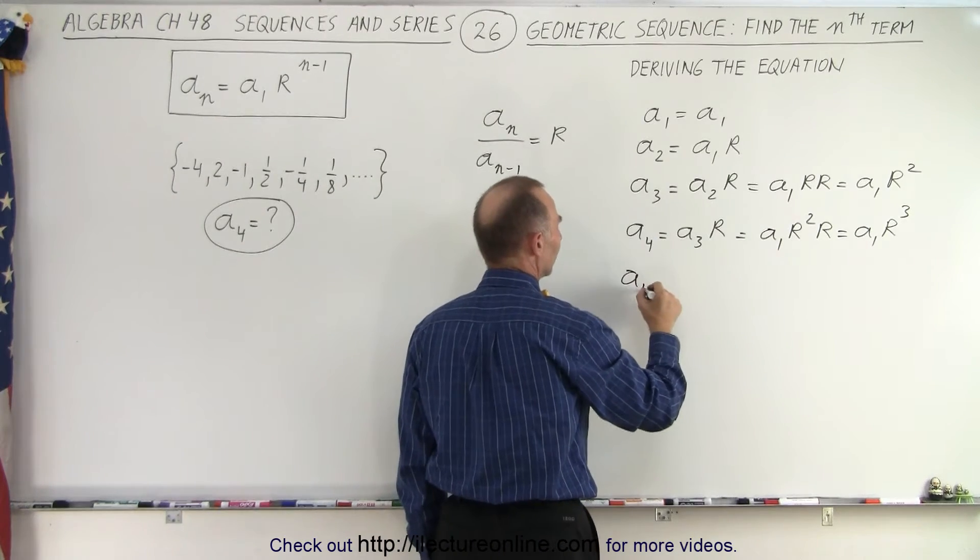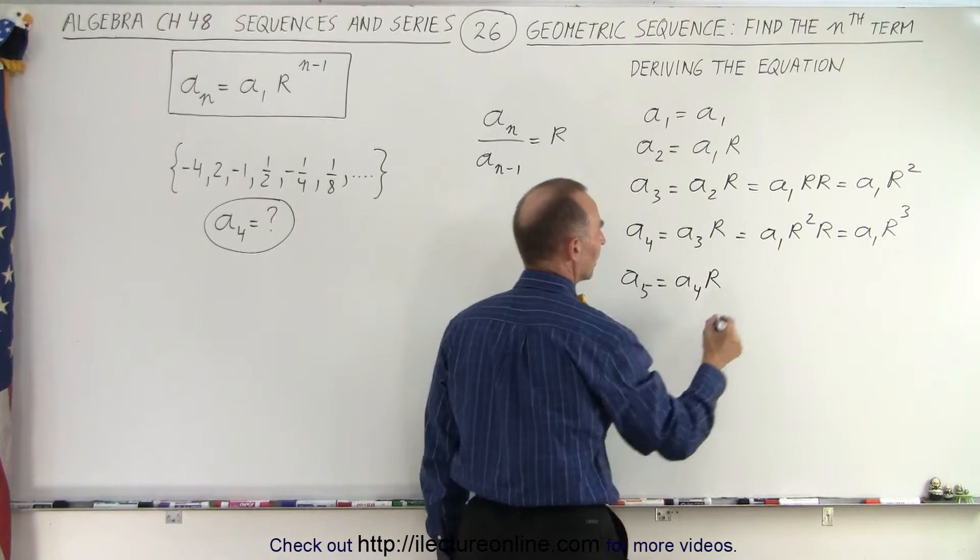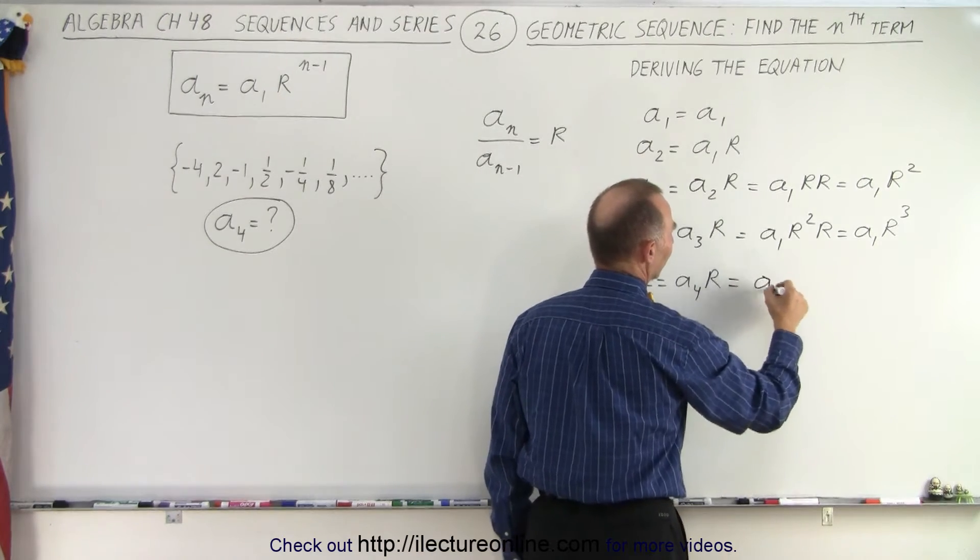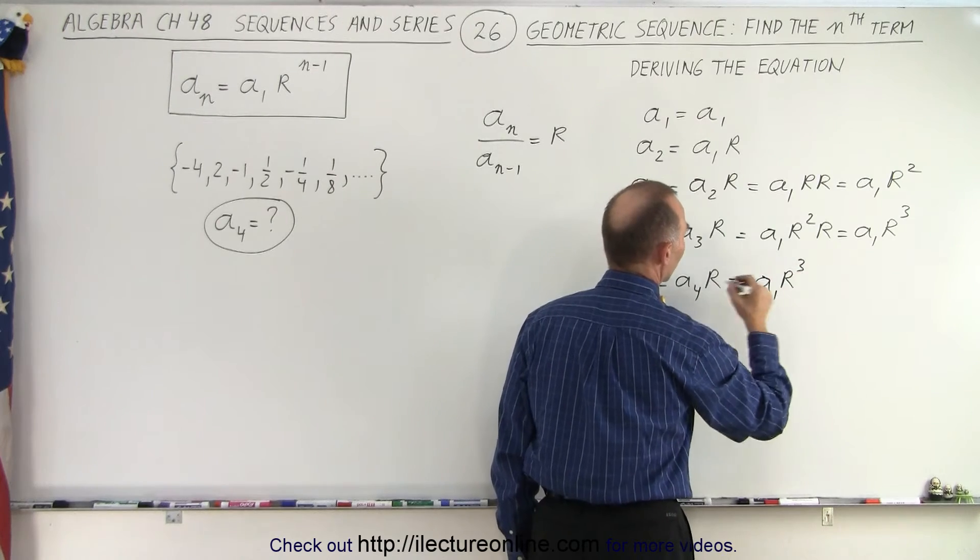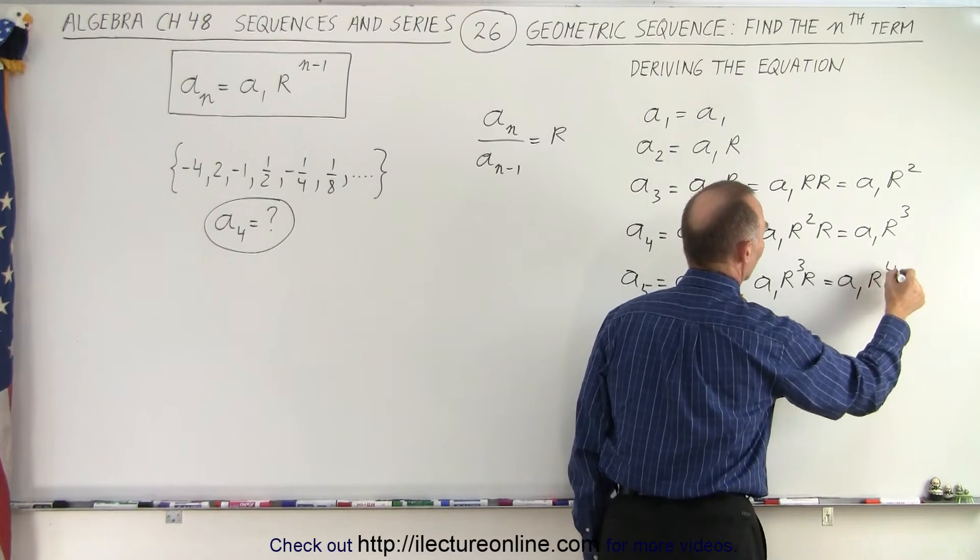And doing one more, a_5 is equal to a_4 times the common ratio r. A_4 is equal to a_1 times r cubed times r, which is equal to a_1 times r to the fourth.